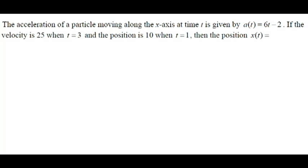We are asked to go from acceleration all the way up to position. Now, luckily, they've given us a couple of initial conditions. They gave us the initial value of velocity, (3, 25), as well as position, (1, 10). And so we're going to have to do an IVP problem twice.